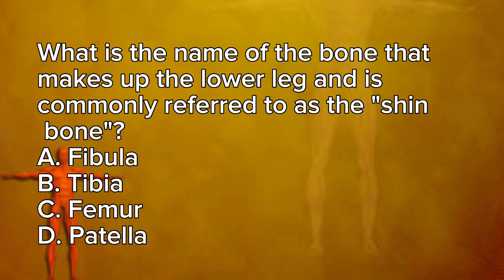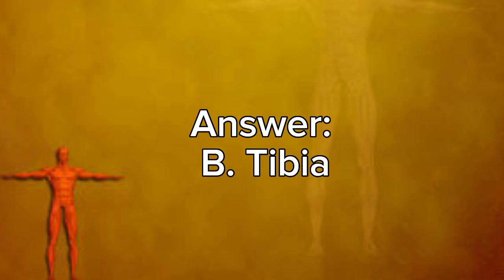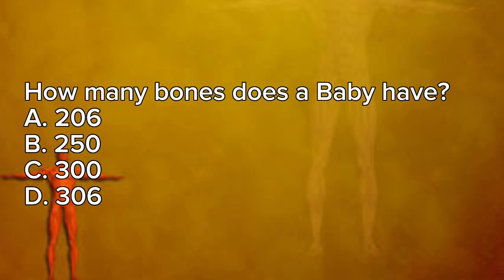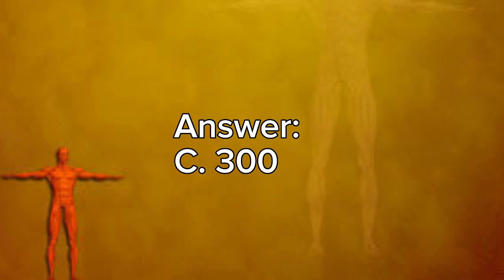What is the name of the bone that makes up the lower leg and is commonly referred to as the shin bone? A. Fibula. B. Tibia. C. Femur. D. Patella. Answer: B. Tibia. How many bones does a baby have? A. 206. B. 250. C. 300. D. 306. Answer: C. 300.